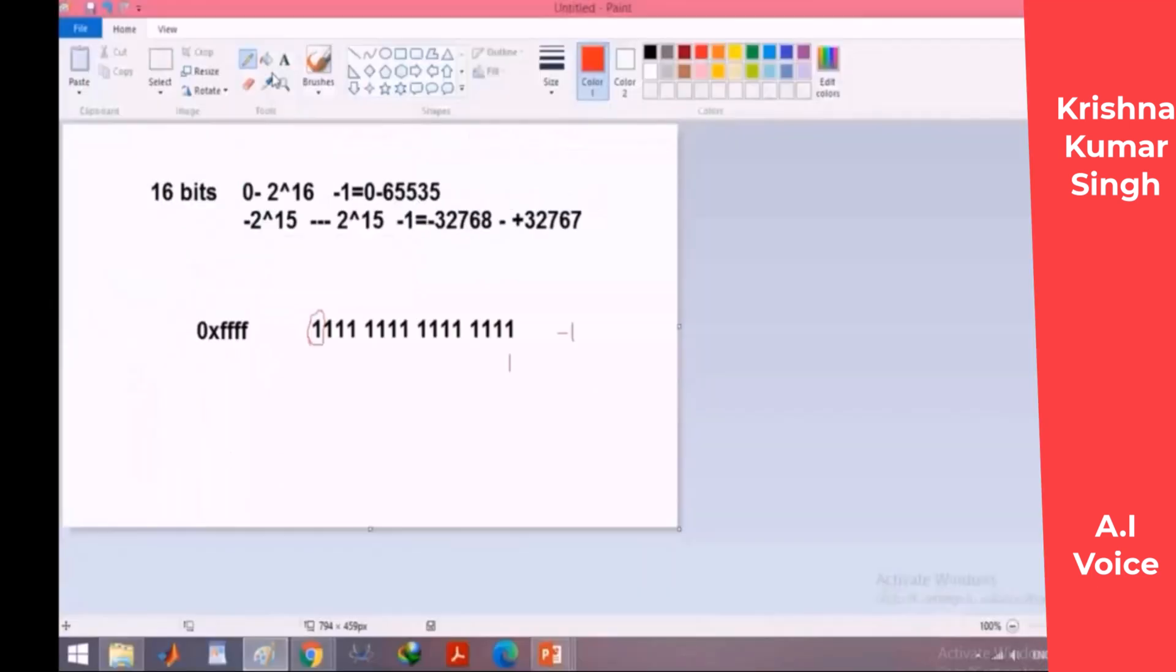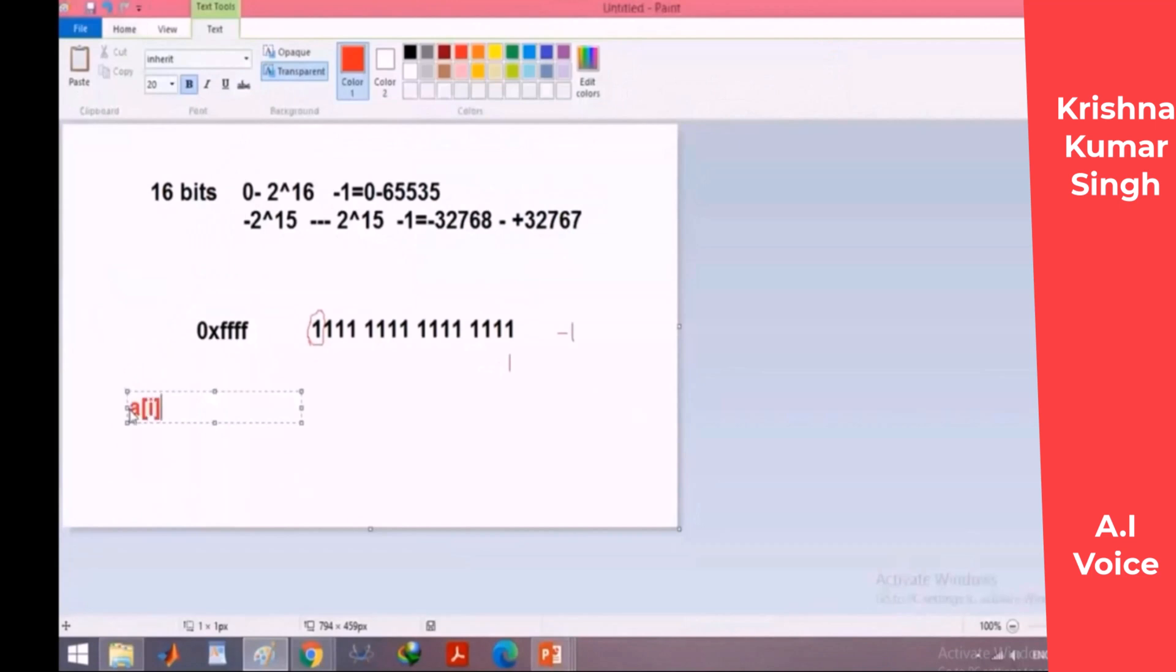And then for every index the compiler finds the address of that entry by using the base address plus index number multiplied by the size of the elements. Finally, the address of that entry is found by this formula: base of the array plus index multiplied by size of the element of the array. This is the way that compilers in C or other high level languages point to one element in the array.